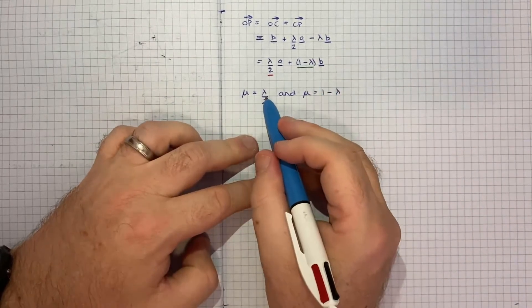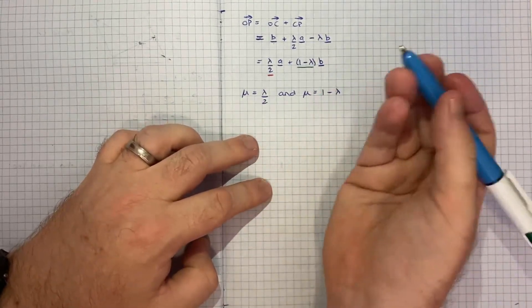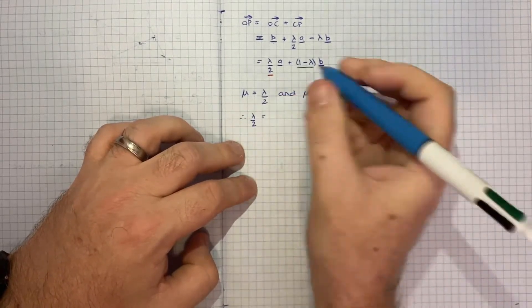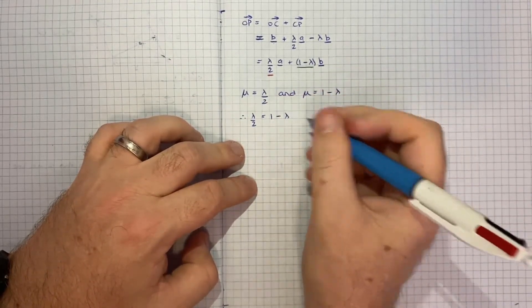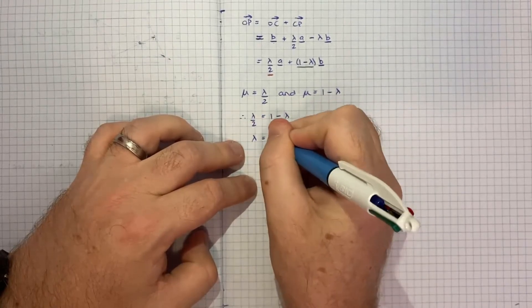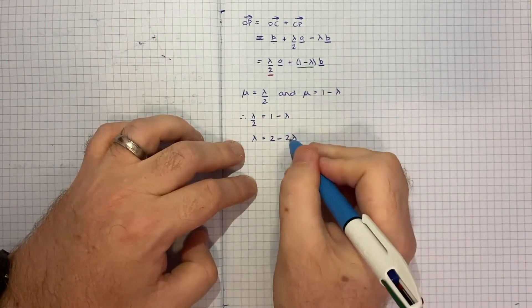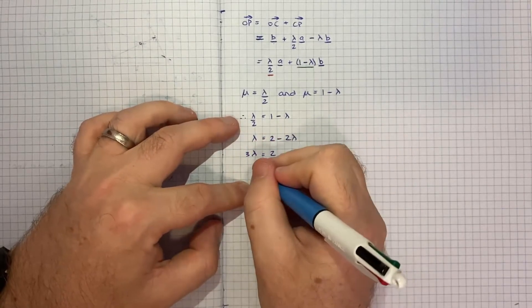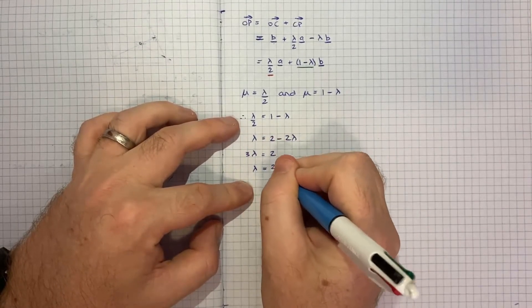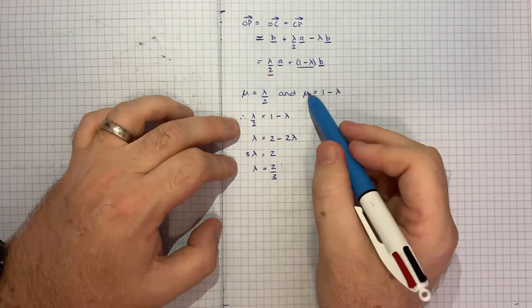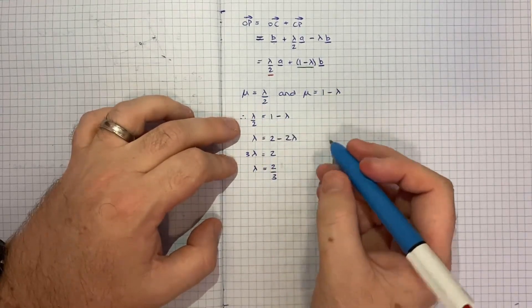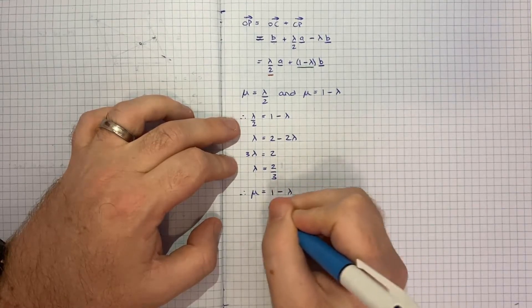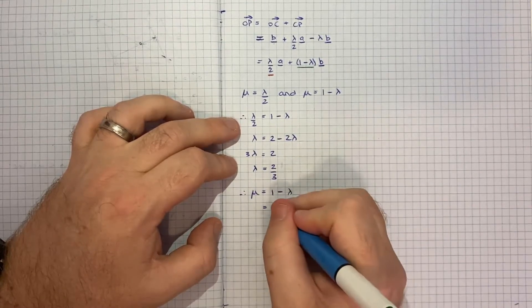So given both of these things are mu, we can set those equal. So therefore, lambda on 2 is equal to 1 minus lambda. So lambda is equal to 2 minus 2 lambda. We can bring this over. We'll get 3 lambda equals 2. Therefore, lambda equals 2 on 3. And therefore, mu, I could use either of these. But therefore, mu is equal to 1 minus lambda, which is 1 minus 2 on 3 or 1 on 3.